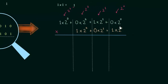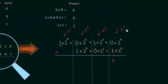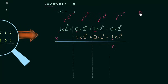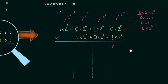I will multiply 1010 — the coefficients of the first number — by this 1. 1 multiplied by 0 gives us 0. The weight of this result is 2 raised to power 0 multiplied by 2 raised to power 0, which equals 2 raised to power 0, so this 0 settles in the first column.